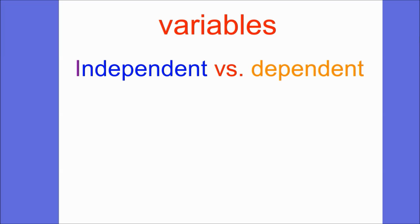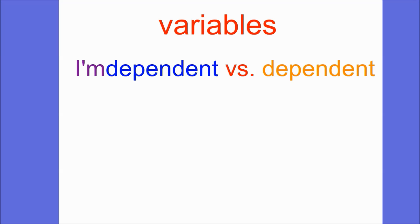You can take it a step further and say it's the 'I'm dependent' variable — it's the one that you change, the one the person doing the experiment is in charge of. The dependent variable, as I said, depends on what happens elsewhere.